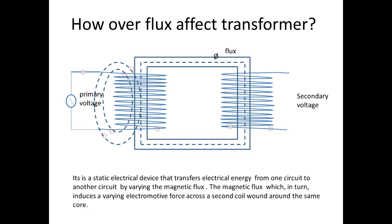Now we see how overflux affects a transformer. I will explain using a simple transformer layout. Here you can see the primary winding and secondary winding, both linked with a laminated core. When you connect the supply to the primary side, the flux produced in the primary side is linked with the laminated core. The laminated core carries the flux, which is cut on the secondary winding to produce an induced EMF.